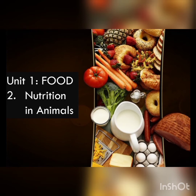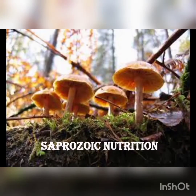Now we will start with Parasitic Nutrition. In parasitic nutrition, organisms obtain food from their hosts. They use plants or animals as their hosts. This relationship between the parasite and host is called Parasitism.